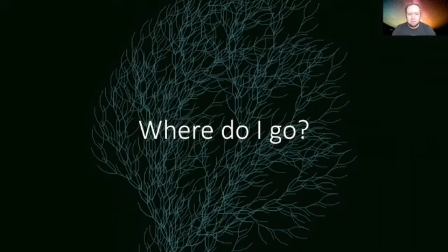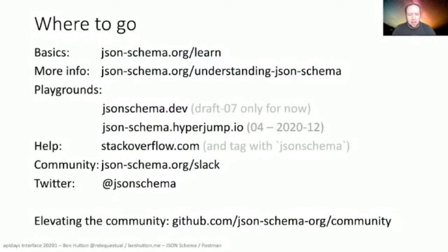Where do you go to learn more, get involved, contribute, or just keep an eye on developments? We provide two layers of learning resources, and I hope we can provide more unified educational resources in the future. The easiest way to try JSON Schema today is to write it in VS Code and paste it into one of the web-based playgrounds. If you need help, we monitor the Stack Overflow JSON Schema tag. If you want to get involved with our community, join our Slack server or follow us on Twitter. You can track these developments in our community repository discussions and issues.